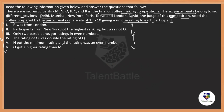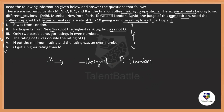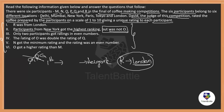R is from London. The participant from New York got the first rank, but it was not O. So whoever got first rank is from New York — it is definitely not R (who belongs to London) and clearly not O either.